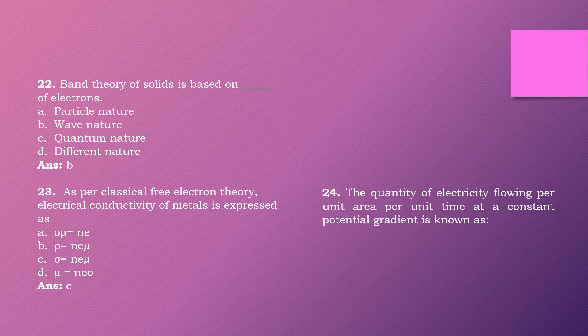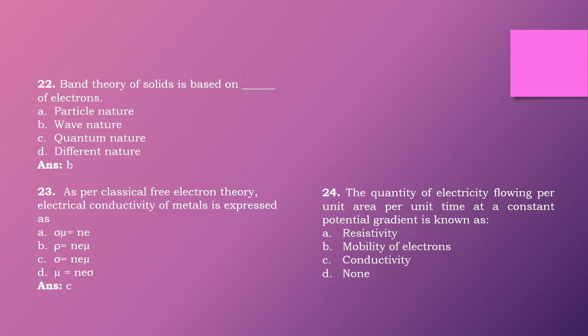Question twenty-four: The quantity of electricity flowing per unit area per unit time at constant potential gradient is known as dash. Options are: resistivity, mobility of electron, conductivity, none. The right answer is option B: mobility of electron.